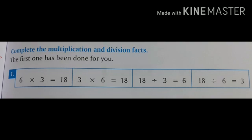What are the division facts based on this? Yes, 18 ÷ 3 = 6, and the last one is 18 ÷ 6 = 3. So the first two are the multiplication facts and the next two are the division facts. Observe them very carefully.